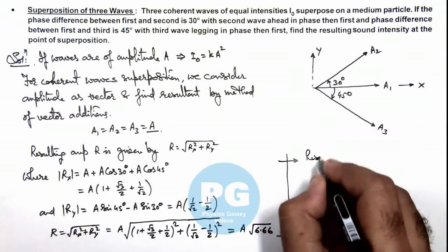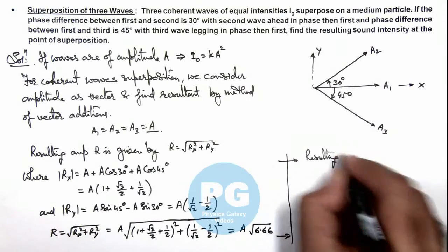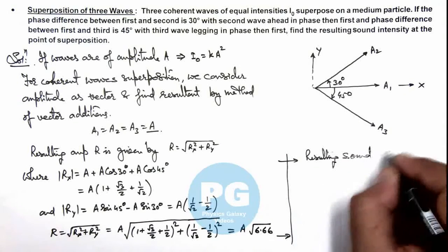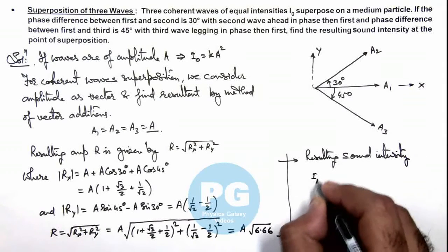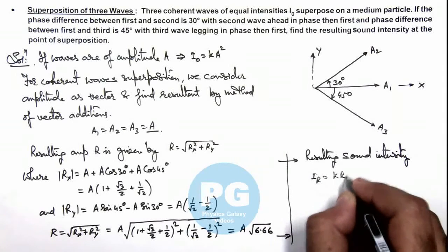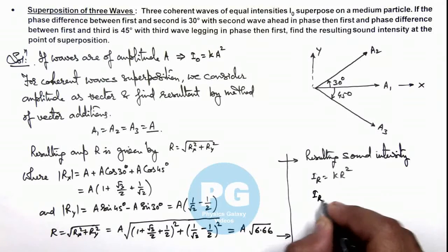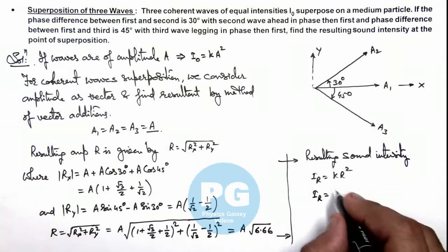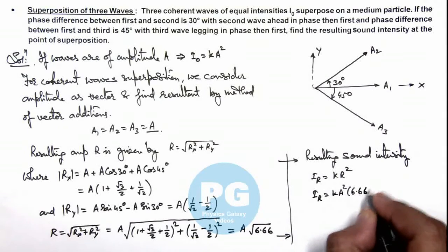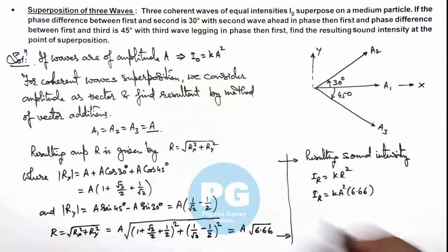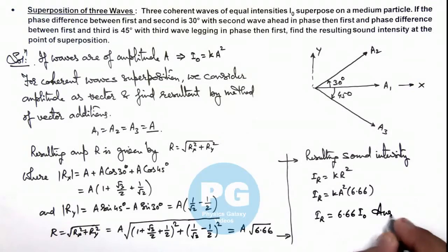If we further continue, the resulting sound intensity can be given as k R², so on substituting the value of R, this gives us k A² multiplied by 6.66, which is I₀. So resulting intensity can be written as 6.66 times I₀—that is the result of this problem.